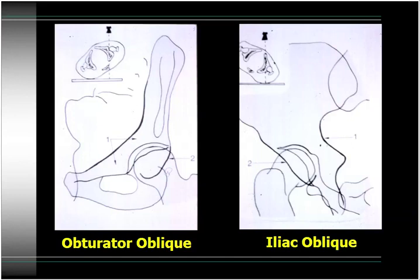The Judet views are very easy to take. All you do is rotate the affected hip up 45 degrees, and then rotate the contralateral uninjured hip up 45 degrees, with the beam oriented directly perpendicular to the gantry. The obturator oblique view shows you the anterior column of the acetabulum and the posterior wall. The iliac oblique view shows you the posterior column of the acetabulum and the anterior wall. So remember: obturator oblique — anterior column, posterior wall; iliac oblique — posterior column, anterior wall.